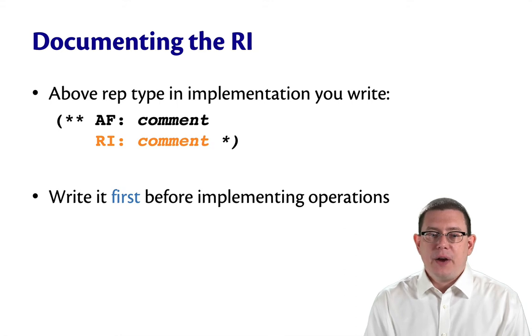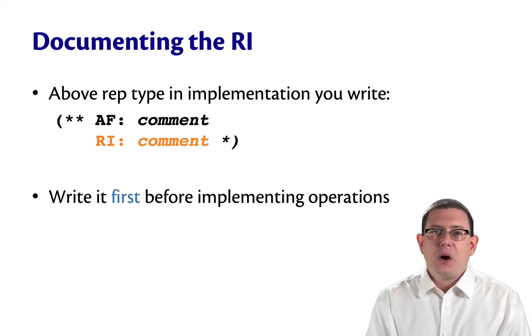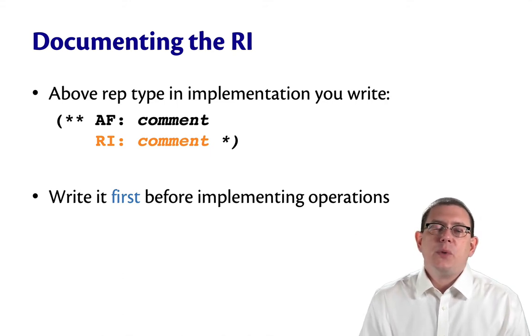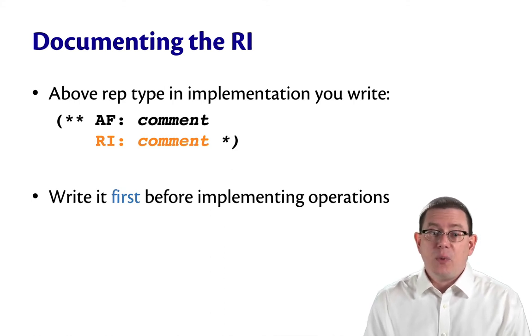To document the rep invariant, you write a comment above the representation type in the file. You can write that as RI colon, you could write it as invariant colon, you could write representation invariant colon if you wanted to be verbose. It doesn't really matter which of those you use. The important thing is that you identify what it is.